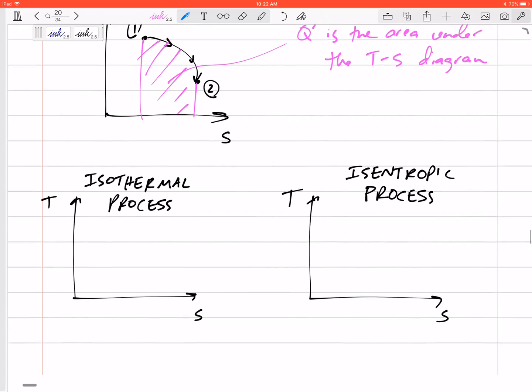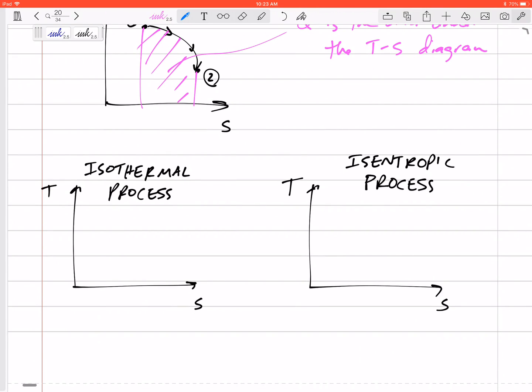So let's think about the TS diagram for an isothermal process. What would it look like on the TS diagram? Well, the temperature stays constant. So whatever temperature is at, it stays there. Maybe entropy is increasing.